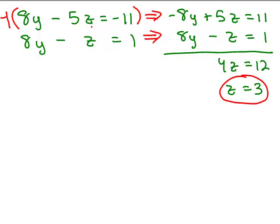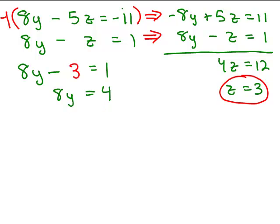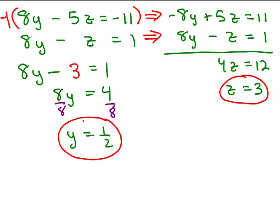Now we go back to either of those two equations and plug in 3 for Z to solve for Y. I'll choose the second equation: 8Y minus 3 equals 1. Adding 3 to both sides gives 8Y equals 4, and dividing both sides by 8 gives Y equals 1/2. So now I know both Y and Z.